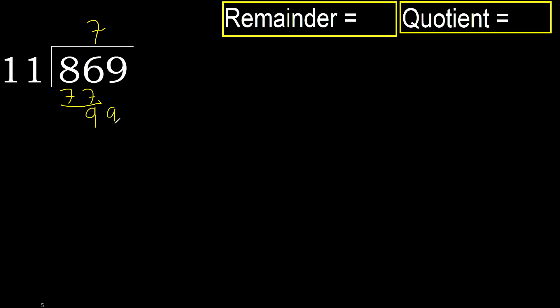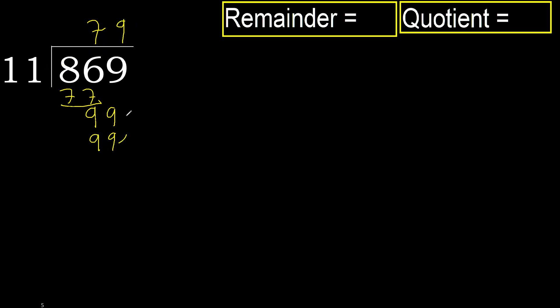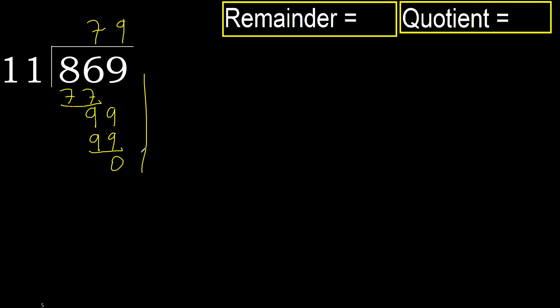Next: 99. 11 multiplied by 9 is 99, which is not greater. Subtract.